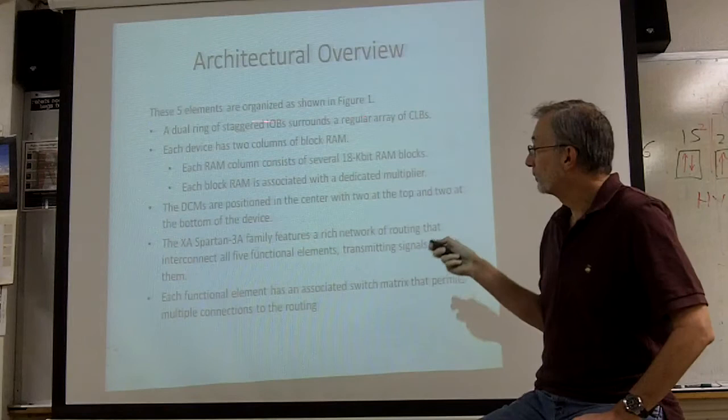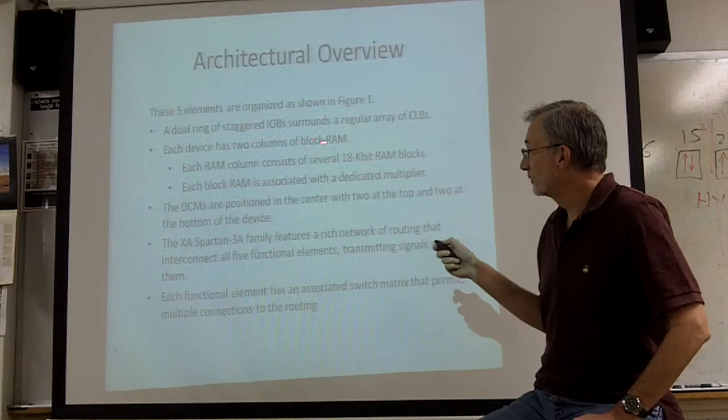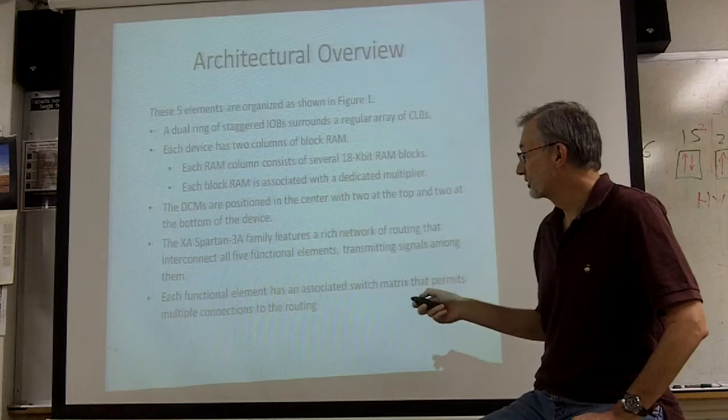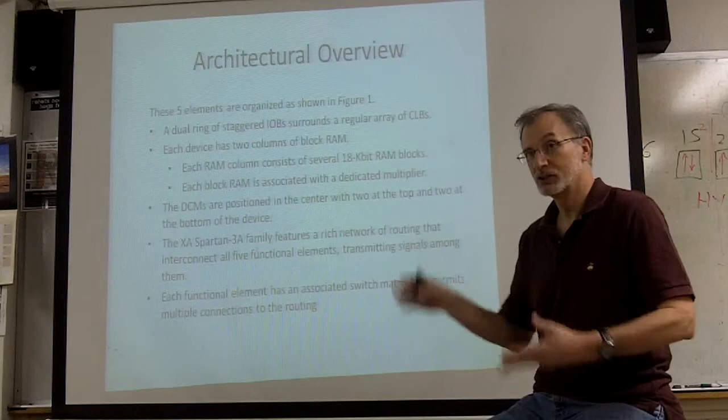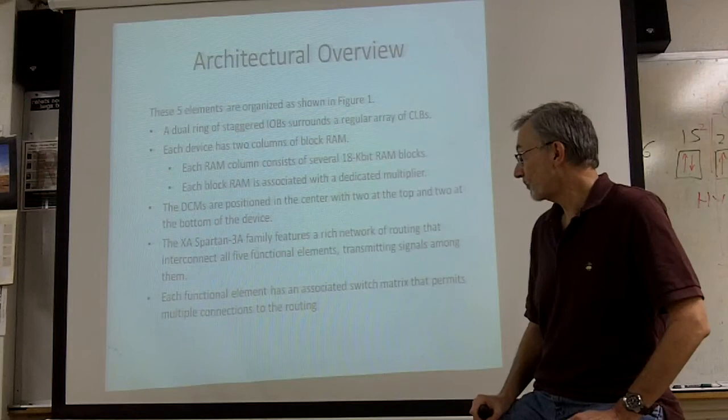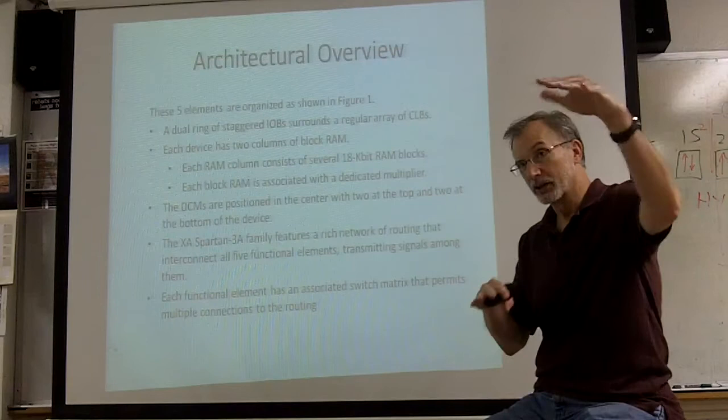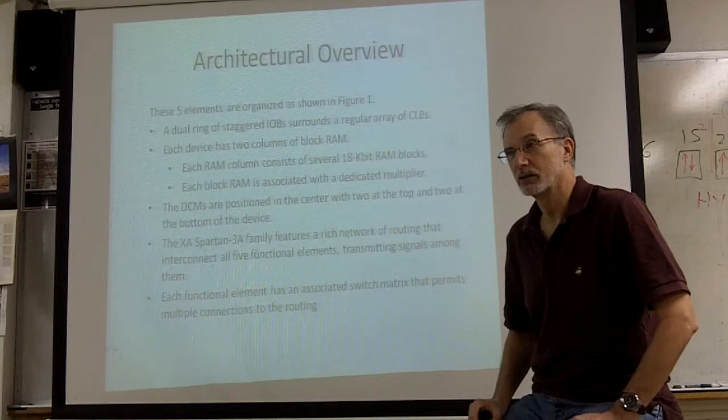There's the I/O blocks around the edges of the FPGA. There's two columns of block RAM. Each column has several of these 18k RAM blocks. And there's a dedicated multiplier associated with each block RAM. There's also this rich network of routing that connects, that is unprogrammed when you buy the FPGA, and it extends all over the entire chip. Each functional element has a switching matrix that allows that element to be connected either to its nearest neighbors, or up to the routing network where the inputs and outputs can be distributed anywhere else on the chip.